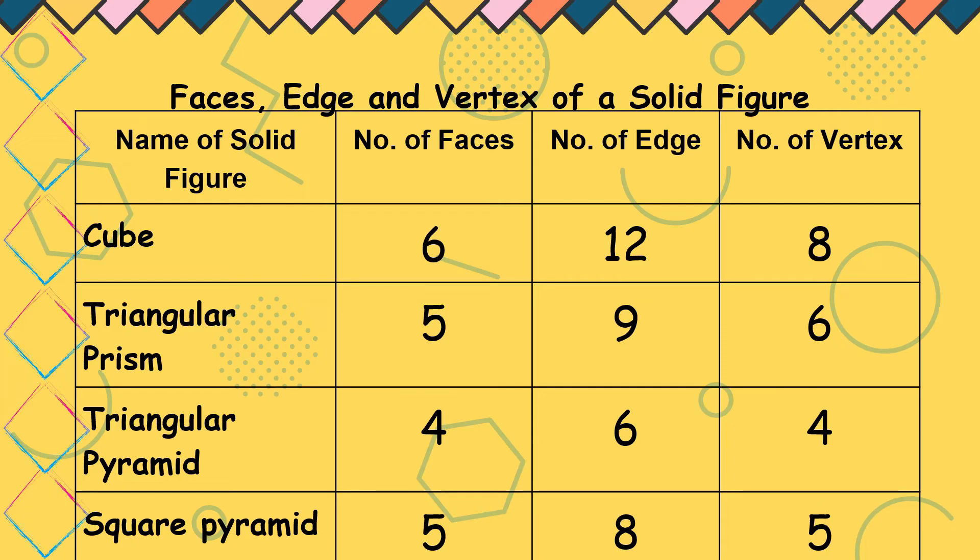Name of solid figure, the number of faces, number of edges, and number of vertices. Cube has 6 faces, 12 edges, and 8 vertices.